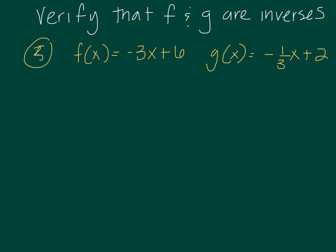Let's just do one more of these and then we'll be good to go. Verify that f and g are inverses and I totally messed up on writing 5, so we're pretending that's a lovely 5 and it's okay. So I'm going to start with f of g of x. This time, g of x is negative 1 third x plus 2. So that means in function f, wherever there's an x, I'm replacing it with negative 1 third x plus 2. So I have negative 3 times negative 1 third x plus 2 plus 6.